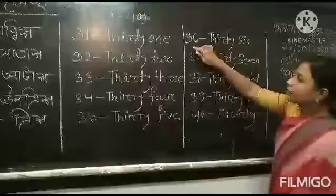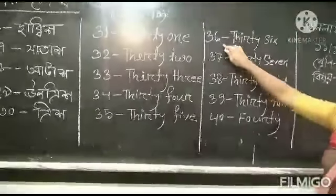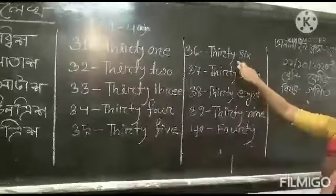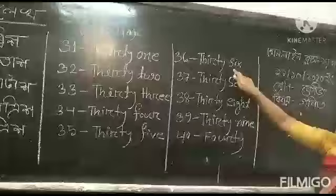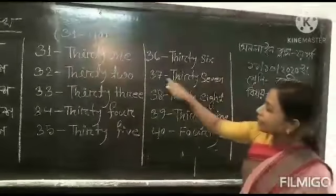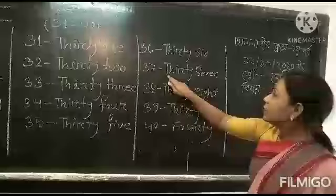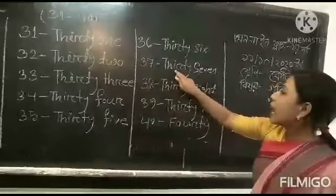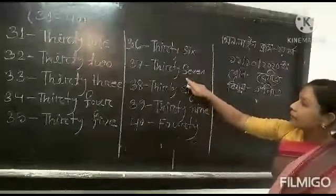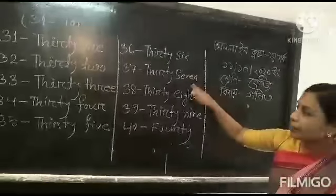E termo letter 36. T, H, I, R, T, Y. 36. S, I, X. 36. That's for 37. 37. T, H, I, R, T, Y. 37. S, E, V, E, N. 37.